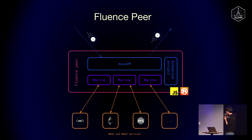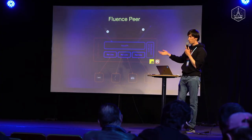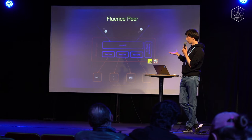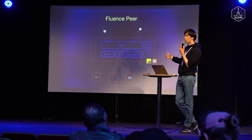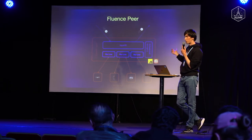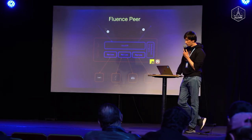On the other side, every Fluence peer can connect to the external world via HTTP or by linking binaries on the same physical machine. It can access APIs, file systems, Web2 networks, Web3 networks — basically anything. A Fluence peer is by default shipped with IPFS, so you always have IPFS access from any Fluence node. Any Fluence node can decide whatever effects or services it provides for the network.